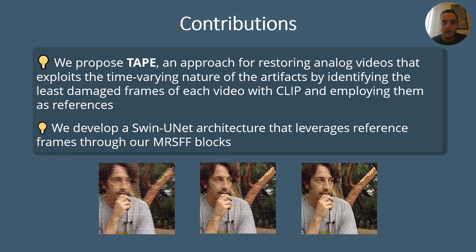In this work, we propose TAPE, an approach for analog video restoration that takes advantage of the time-varying nature of the artifacts typical of analog videos, by identifying the least damaged frames of each video with CLIP and then using them as references for the restoration. To do so, we develop a SwinU-Net architecture that exploits the reference frames through our multi-reference spatial feature fusion block.